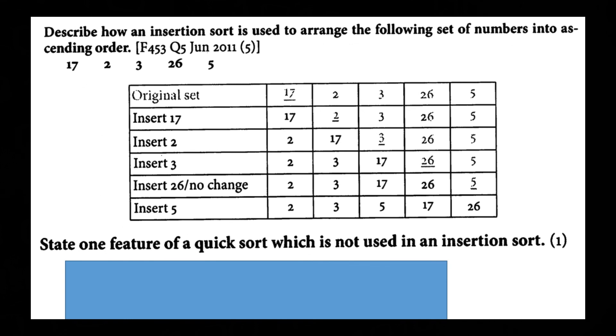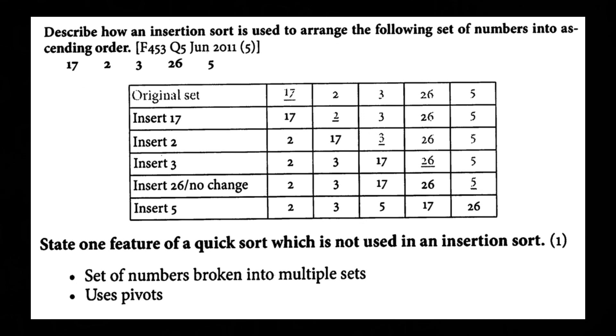State one feature of a quicksort which is not used in an insertion sort. Set of numbers broken into multiple sets which uses pivots.